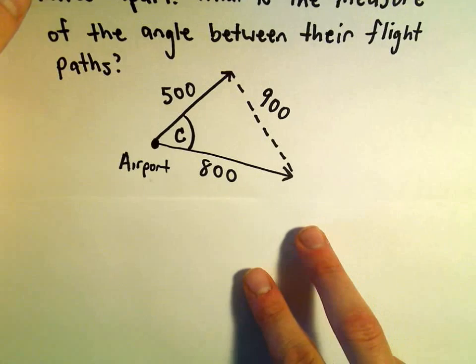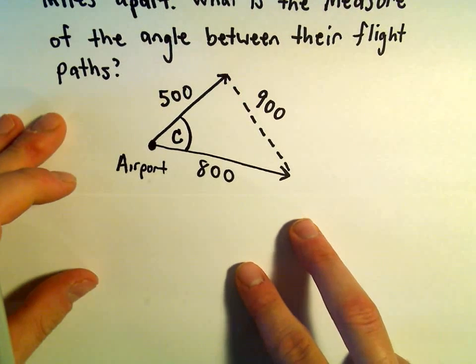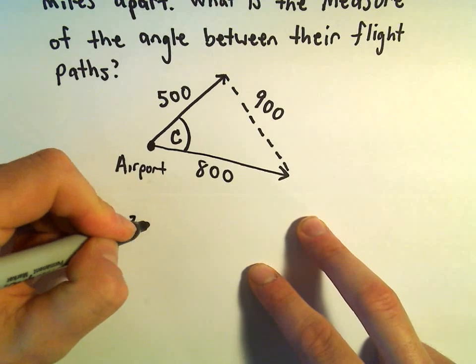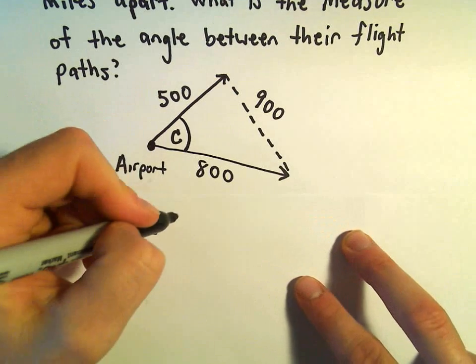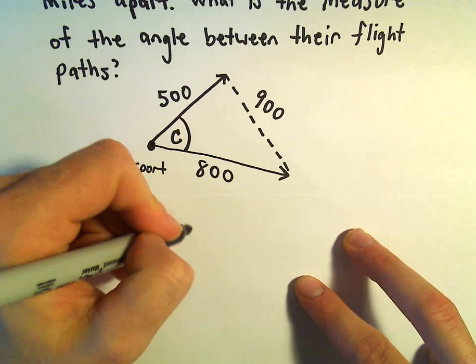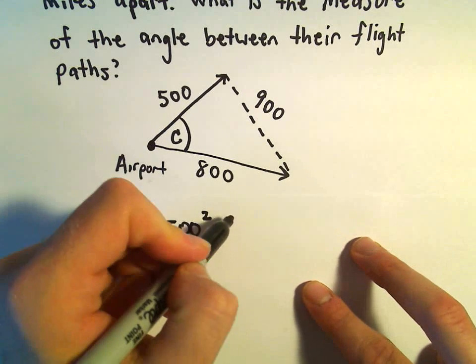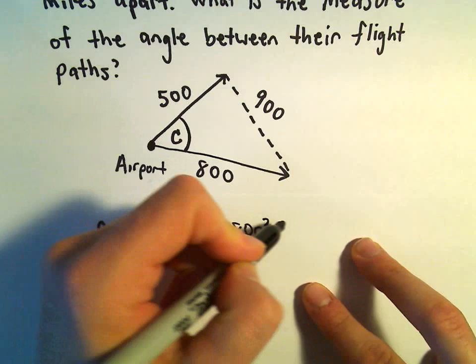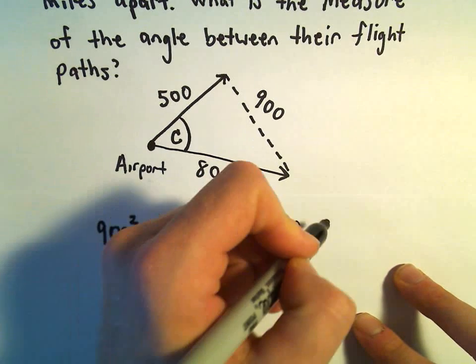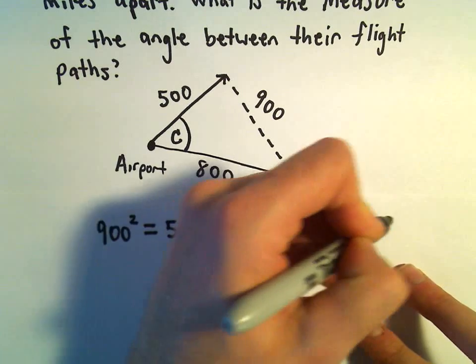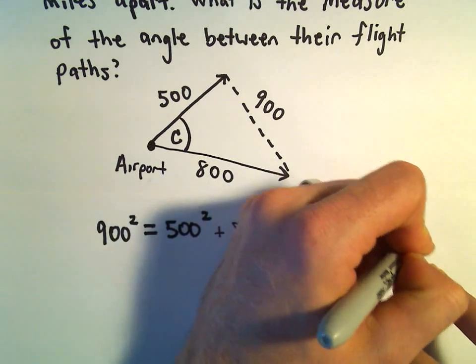So in this case, just use a little bit of the law of cosines to get us what we need. So it would say that 900 squared equals 500 squared plus 800 squared minus two times 500 times 800 times cosine of C.